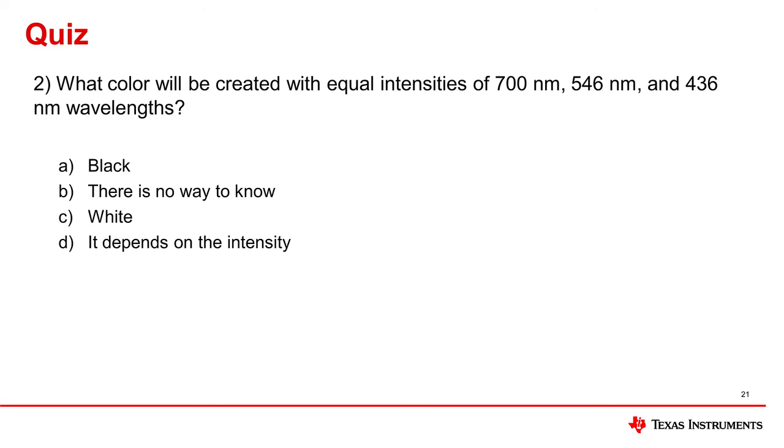What color will be created with equal intensities of 700 nanometer, 546 nanometer, and 436 nanometer wavelengths? C. White light is created with equal intensities of all different wavelengths.